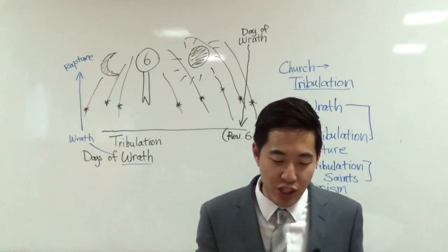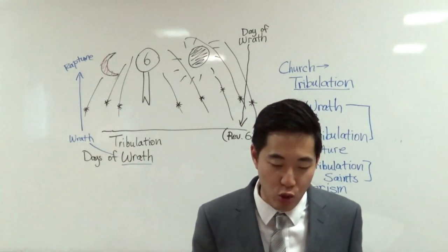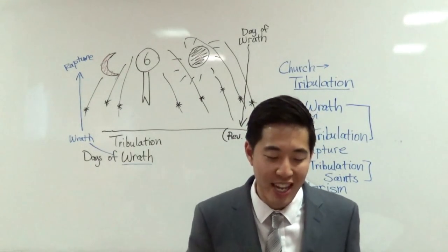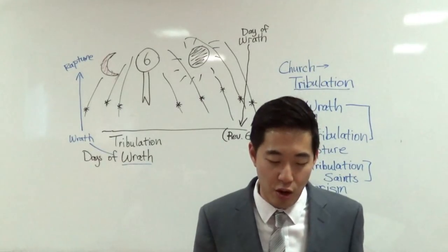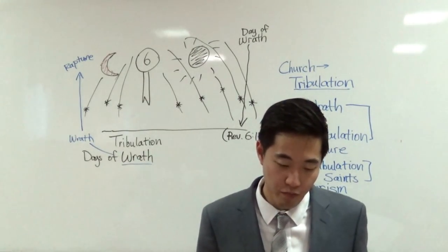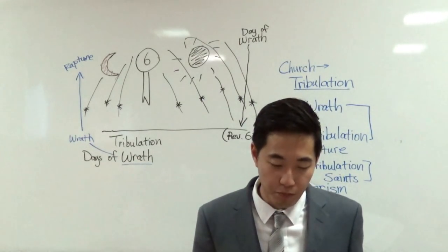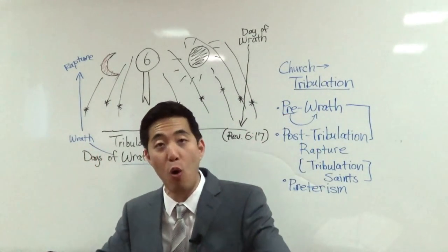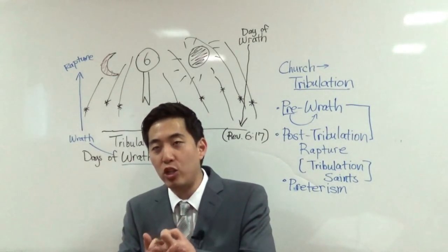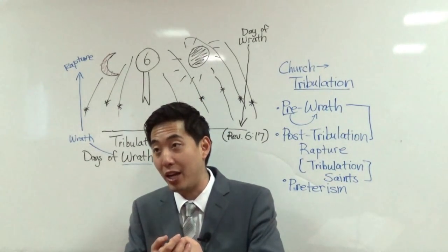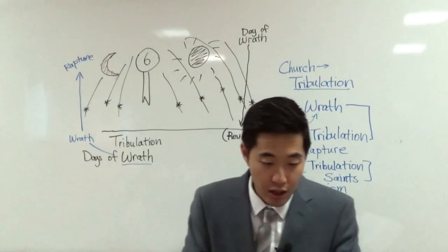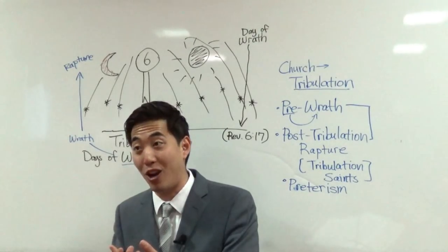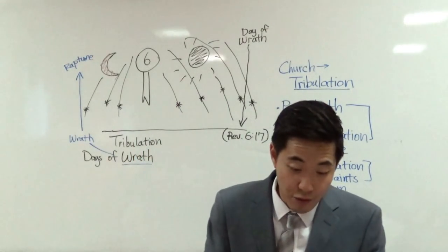So there are four angels standing north, south, east, and west. But notice right here, holding the what? Four winds of the earth. That the wind should not blow on the earth, nor on the sea, nor on any tree. So it's as if God has all these winds ready to blow over the world, but the four angels are the ones that are preventing it from happening. If this is let loose, think about tornadoes, hurricanes, and typhoons.